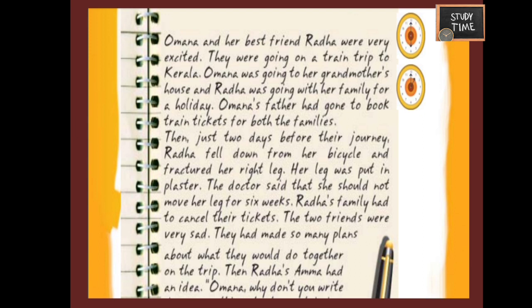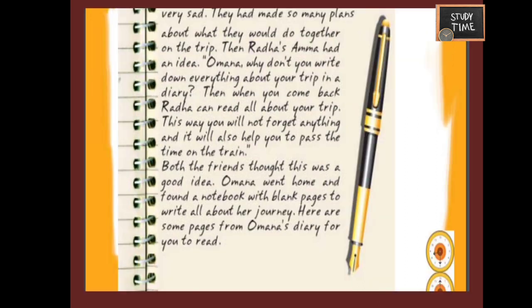In this story there were two friends named Omina and Rada. They planned to go for a trip, but unfortunately Rada fell ill and she could not go. They both were very sad. Rada's mom gave an idea, so Omina decided to write about the journey to share with her friend. Here we are going to see some pages from Omina's diary.